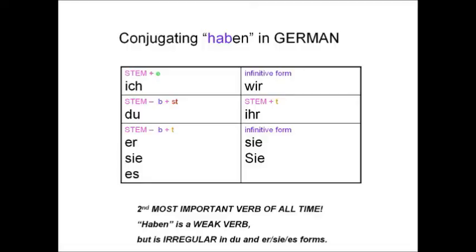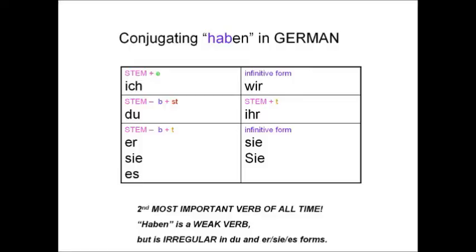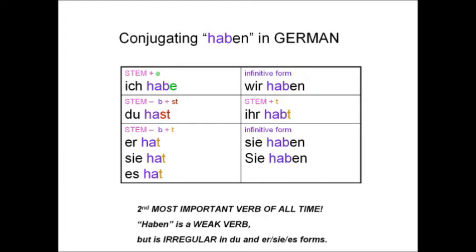The other verb — haben — is a weak verb, but it's irregular in the du and er, sie, es forms. The stem is H-A-B, but watch what we do to the B — we say see ya, buddy. Ich habe. Du hast. Er hat. Wir haben. Ihr habt. Sie haben.